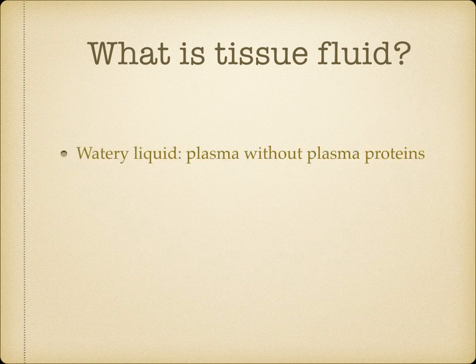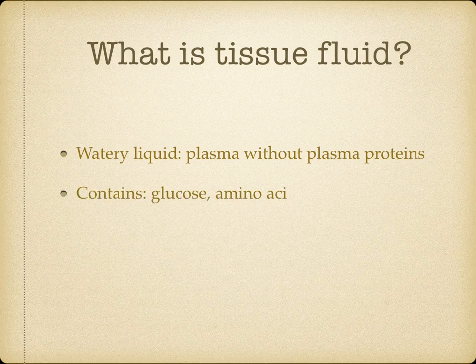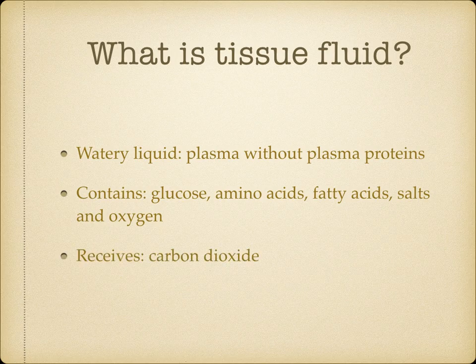Tissue fluid is formed from the plasma of the blood. It's a very watery liquid which contains glucose, amino acids, fatty acids, salts and oxygen — all of which it supplies to the tissues. In return it receives carbon dioxide and other waste materials from the tissues. So tissue fluid is blood plasma without plasma proteins.